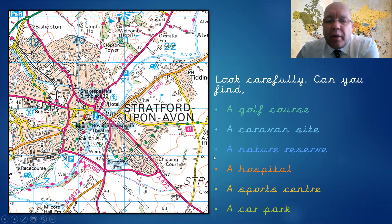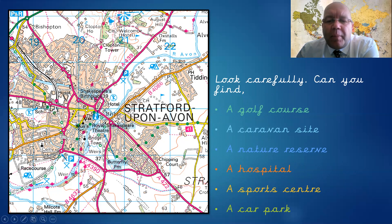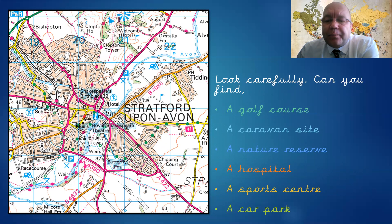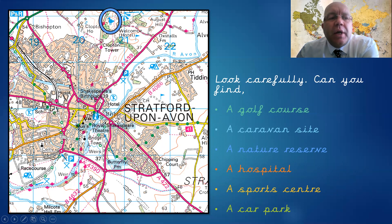Here's a tricky one because we haven't mentioned this symbol yet. A nature reserve — somewhere full of nature, usually with native birds. What symbol do you think it might be, and where is it on the map? Well, it's up there. The symbol for a nature reserve is a blue duck, because it's often waterfowl and waterbirds that are found at nature reserves. There's the nature reserve in Stratford, and it's that blue duck symbol.